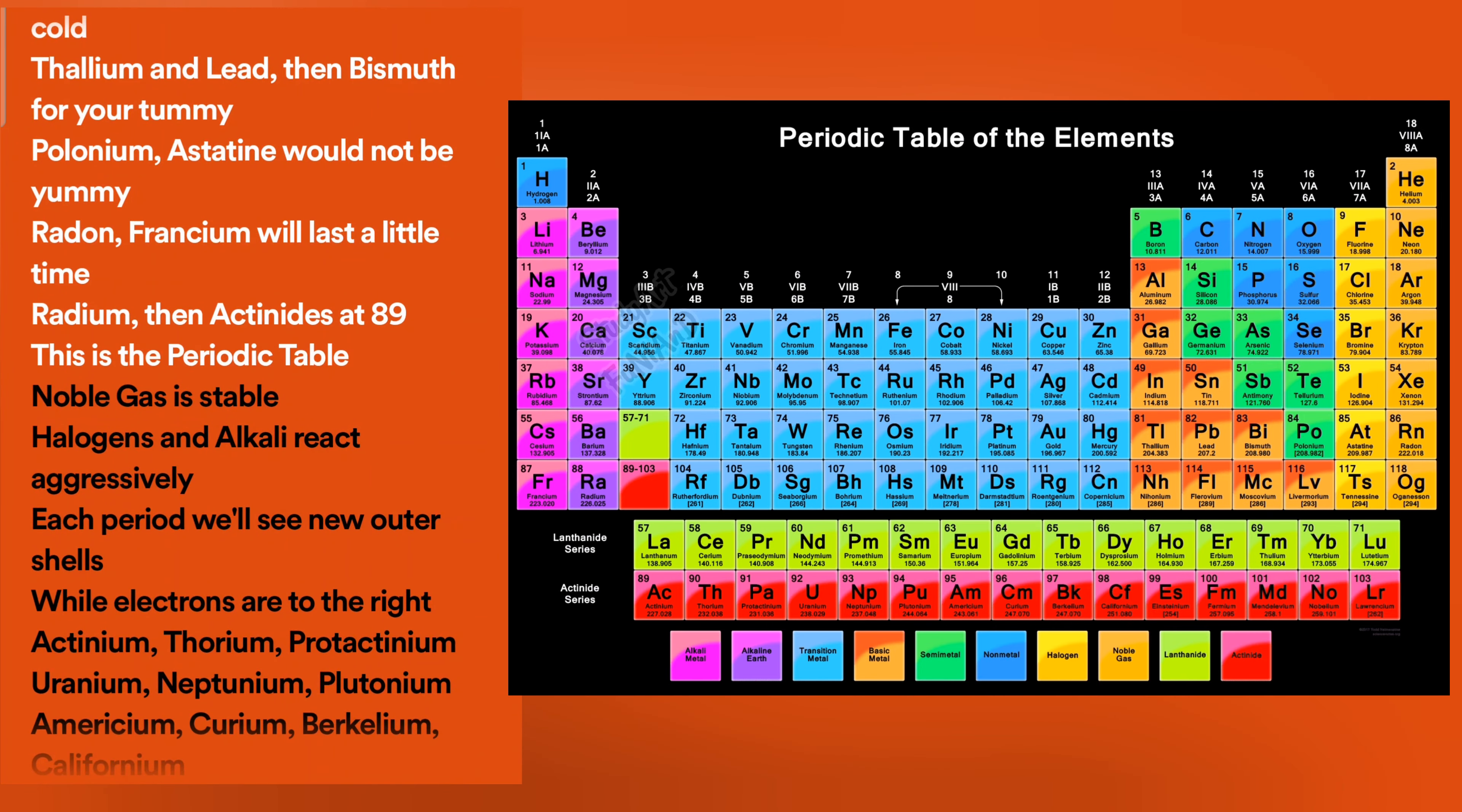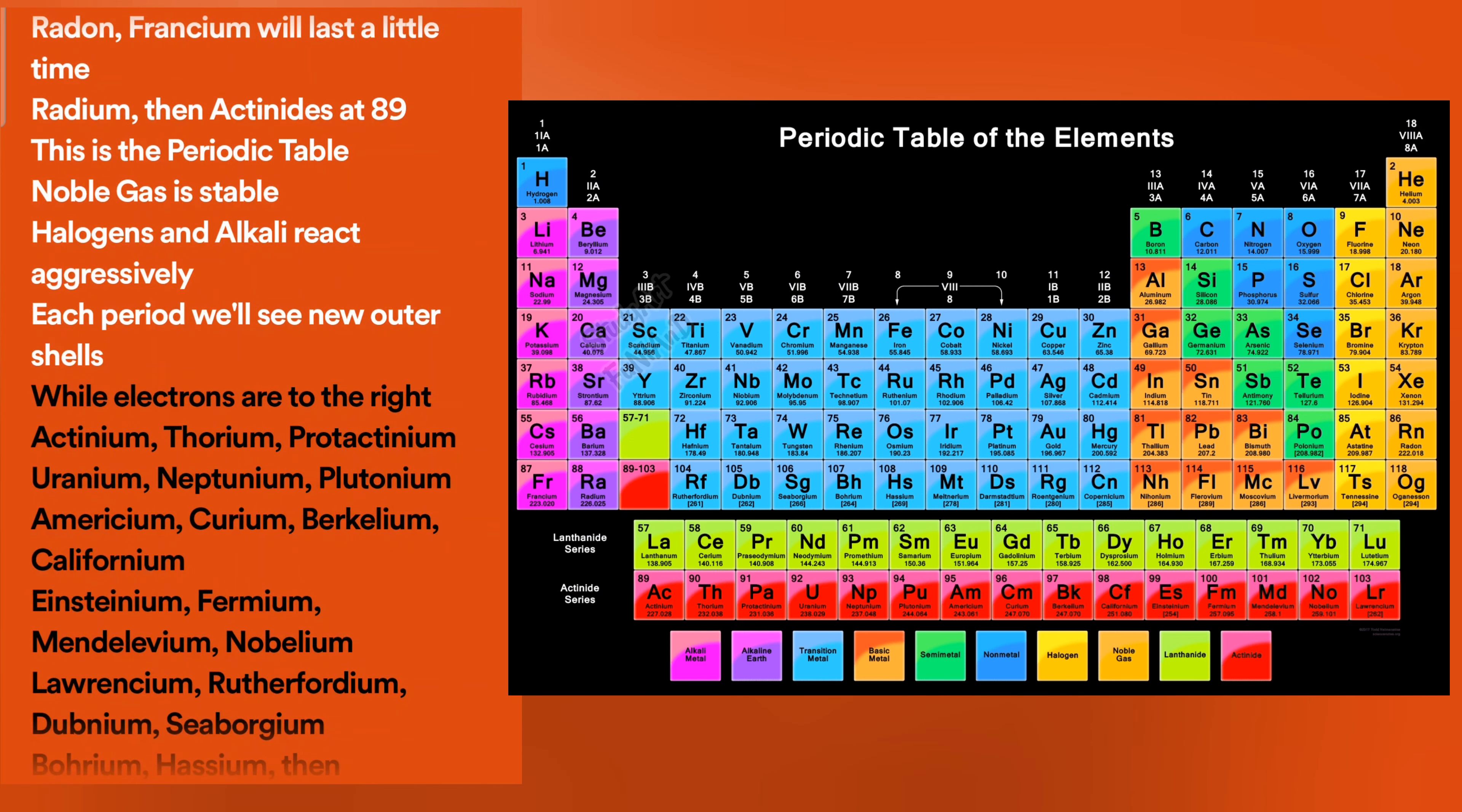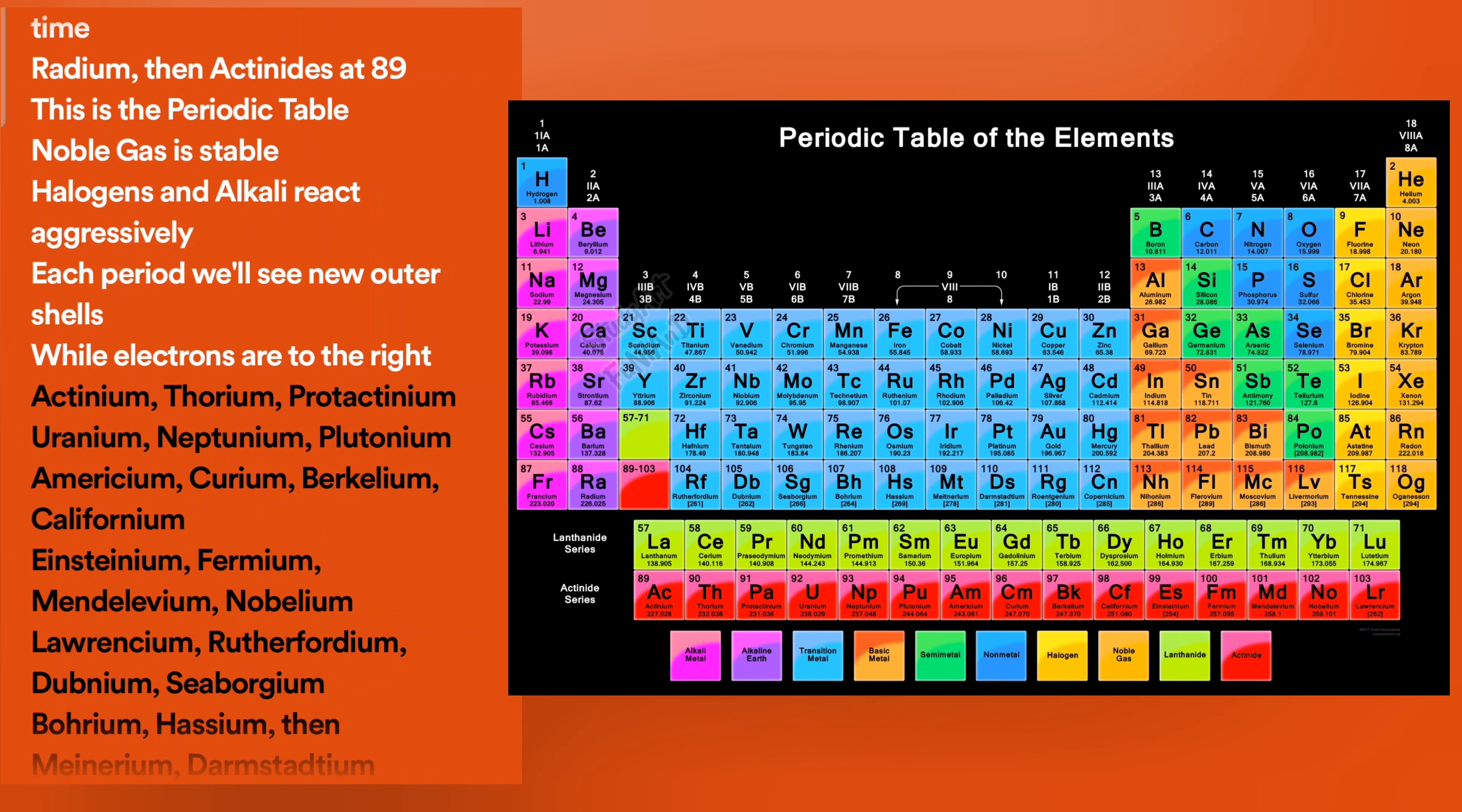This is the periodic table. Noble gas is stable. Halogens and alkali react aggressively. Each period will see new outer shells. While electrons are to the right.